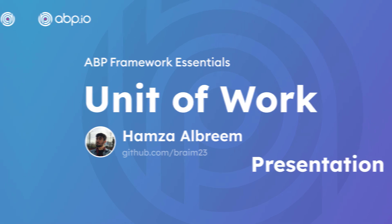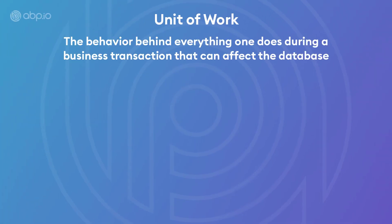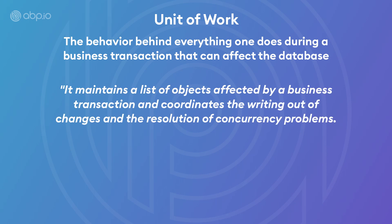The presentation part. The unit of work term itself is a behavior that stands behind everything one does during a business transaction that can affect the database. Martin Fowler describes it as the following: it maintains a list of objects affected by a business transaction and coordinates the writing out of changes and the resolution of concurrency problems.